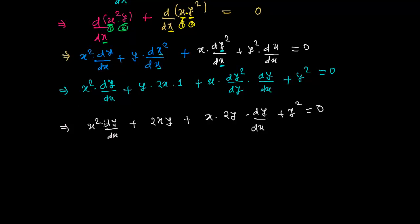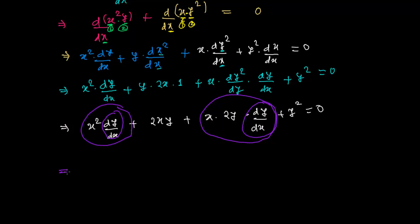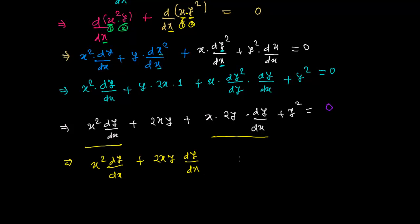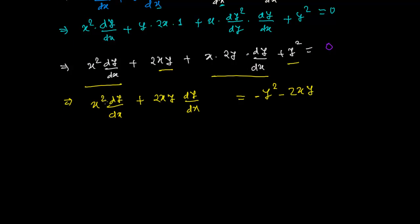The next step is to write all terms containing dy over dx together. We have x squared dy over dx and 2xy dy over dx. The remaining terms — y squared and 2xy — move to the other side, giving minus y squared minus 2xy. So: x squared dy over dx plus 2xy dy over dx equals minus y squared minus 2xy.